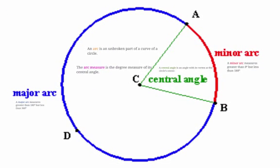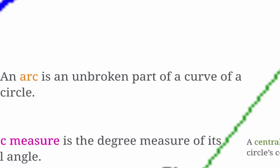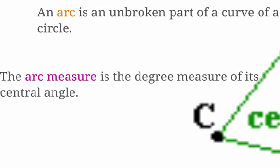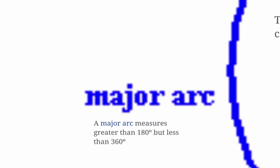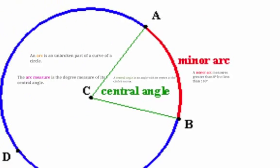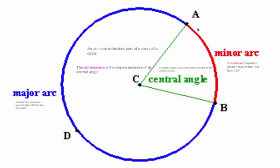Next we're going to talk about arcs. An arc is just an unbroken part of the curve of a circle, and the arc measure is the degree measure of its central angle. A major arc is an arc that measures greater than 180 degrees but less than 360. A minor arc is an arc that measures greater than 0 but less than 180. If you take a minor arc and its corresponding major arc, together they make a whole circle.